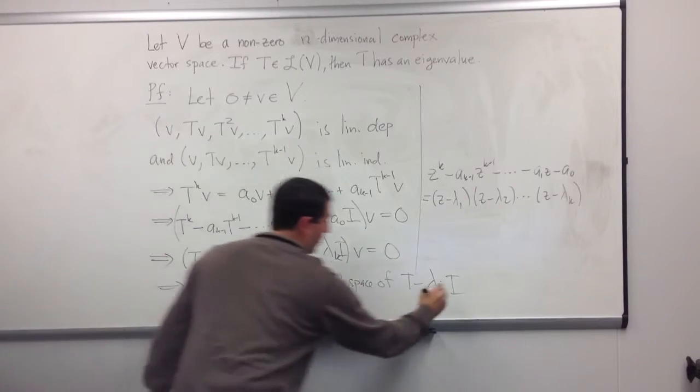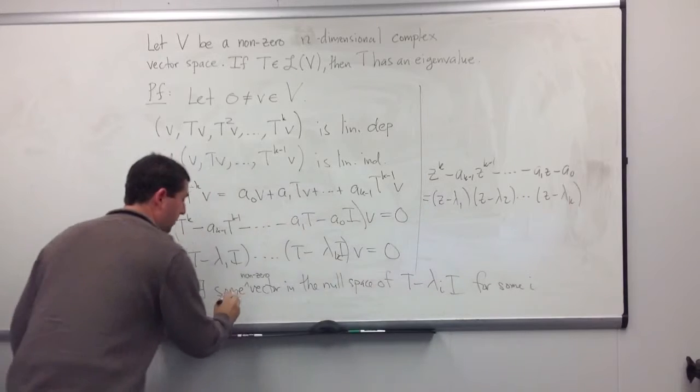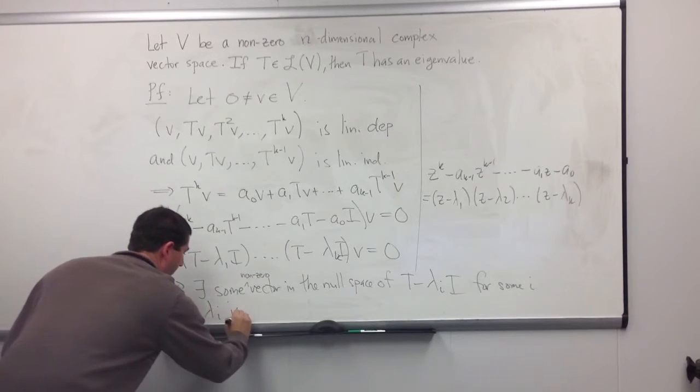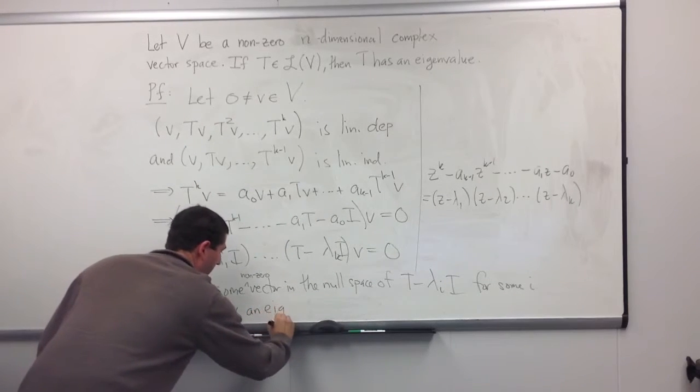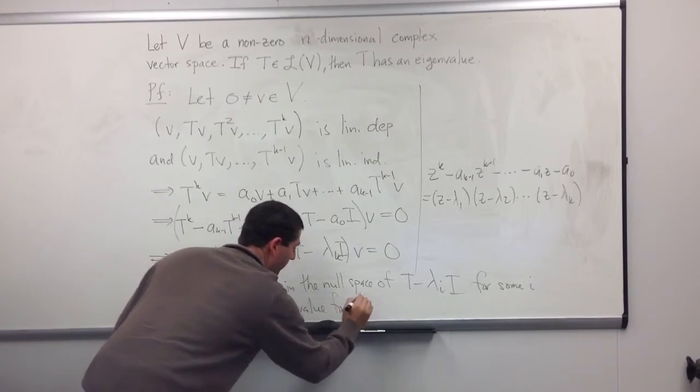λᵢ is going to be an eigenvalue for T if and only if there's a non-zero vector in the null space of T minus λᵢ times the identity map. So, this implies, and this is for some i, this implies λᵢ is an eigenvalue for T.